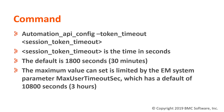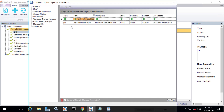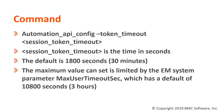The Session Token Timeout is the time in seconds until the session's token expires when the session has been idle. The default is 1800 seconds or 30 minutes. The maximum value that you can set is limited by the EM system parameter max_user_timeout_second, which has a default value of 3 hours.